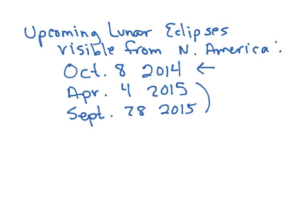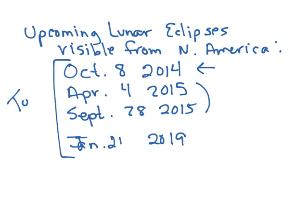The next total lunar eclipse the Americas will see is January 21st, 2019 — sorry about that gap. This list goes through 2020; after that there's a partial we won't see, and a number of penumbrals when the moon goes into the outer part of the shadow, which isn't that spectacular. So between now and 2020, those are the total lunar eclipses visible from North America.